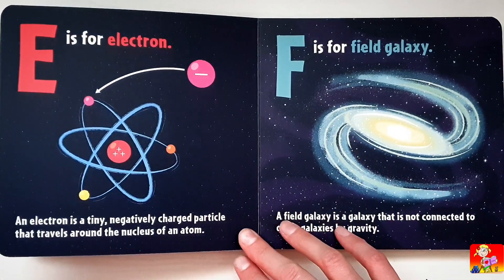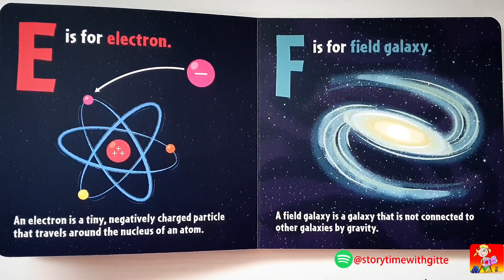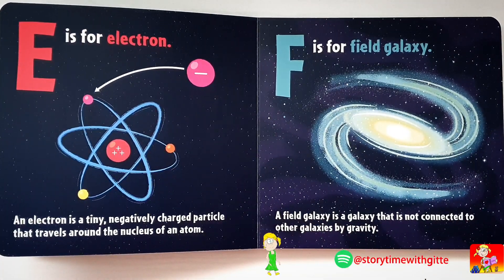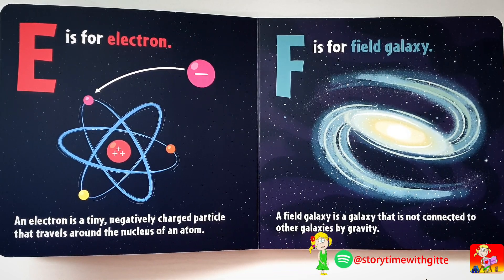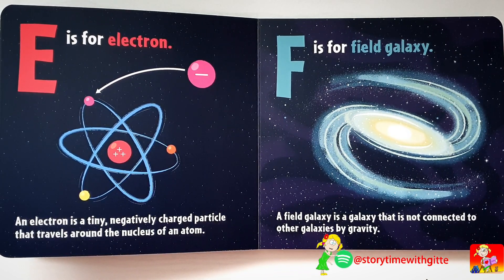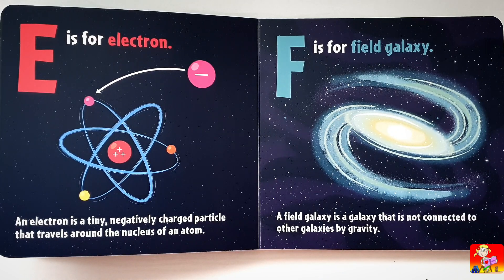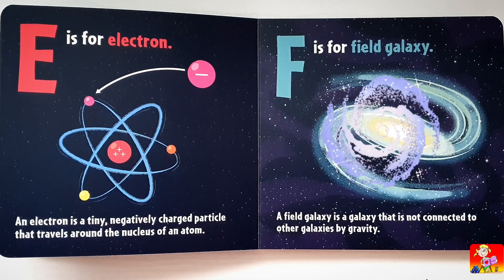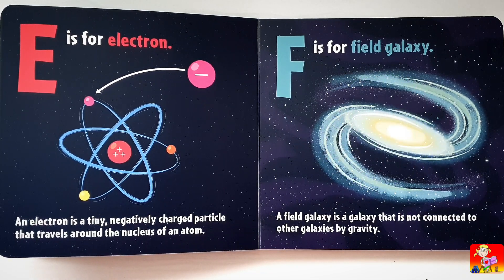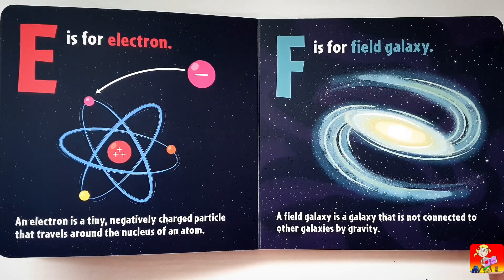E is for Electron. An electron is a tiny negatively charged particle that travels around the nucleus of an atom. F is for Field Galaxy. A field galaxy is a galaxy that is not connected to other galaxies by gravity.